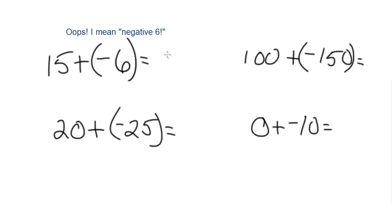15 plus negative 6 is really 15 minus 6, which, of course, is just 9. 20 plus negative 25, well, now we have the smaller number first, and we're subtracting 25, so that gives us a negative 5. 100 plus negative 150, well, this is just like the last one. And we get a negative 50. And 0 plus negative 10. Well, now the only difference is we're starting at 0. We go backwards 10, and we end up with negative 10.